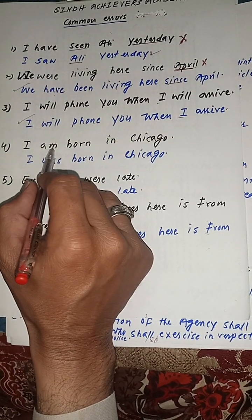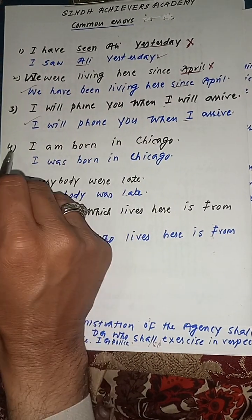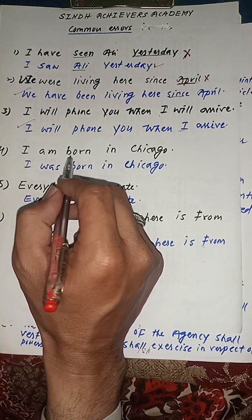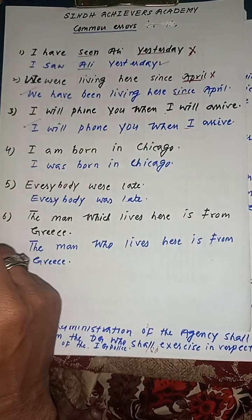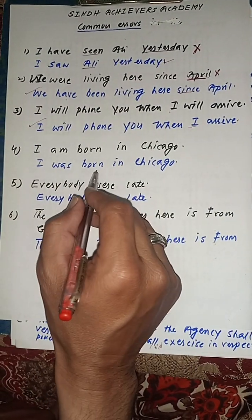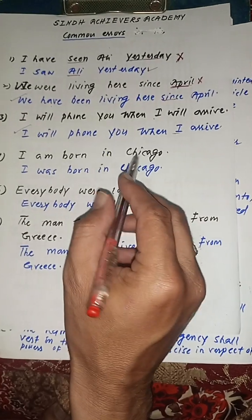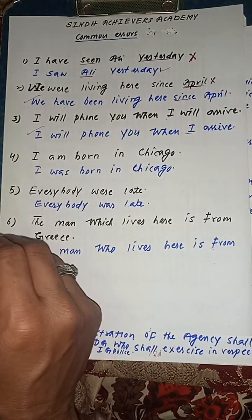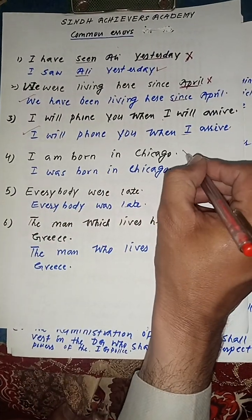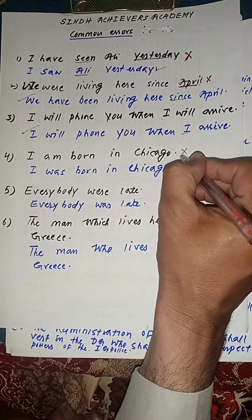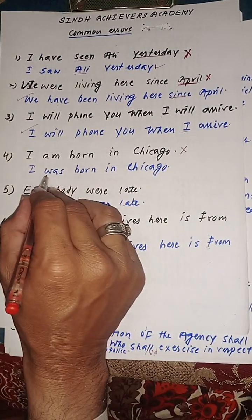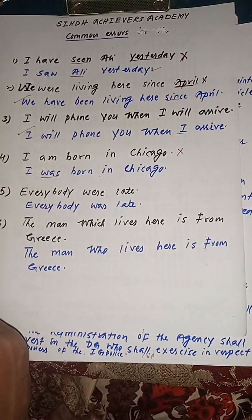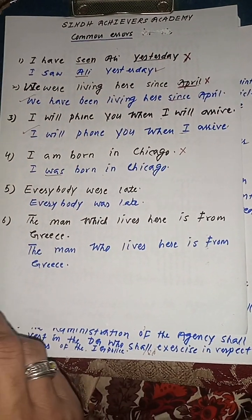Another example: 'I am born in Chicago.' Here, we are talking about a past event but using present tense. This is again grammatically incorrect. The correct sentence is: 'I was born in Chicago.'